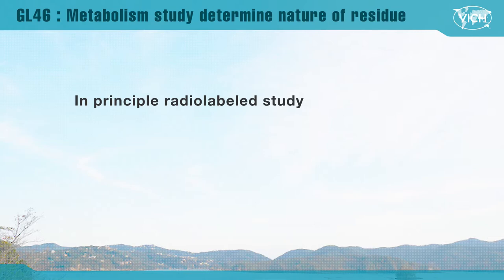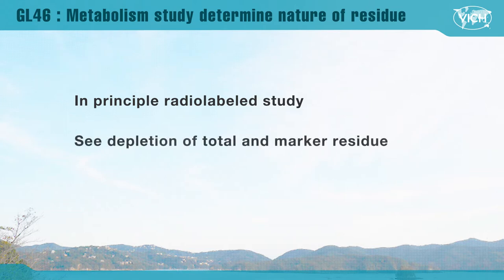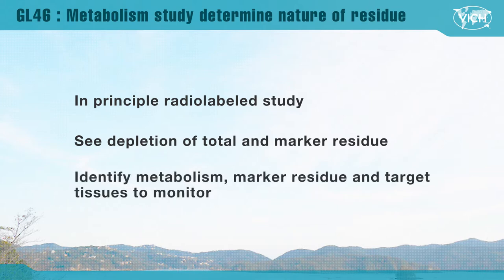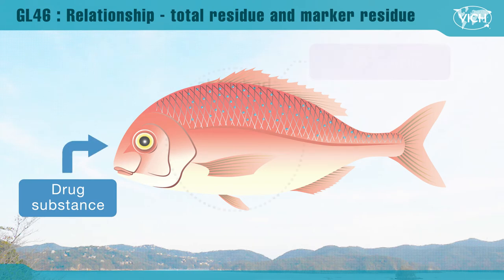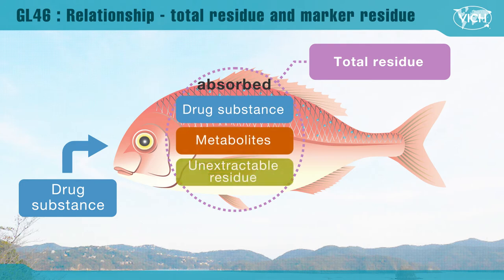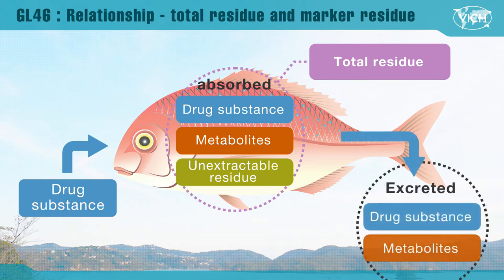The GL46 study has been designed to determine the nature of residues and is based on a radio-labeled study in principle. This guideline describes the procedure to see total residue depletion and marker residue depletion, and will also provide information on metabolism and identify a marker residue as well as target tissues for residue monitoring. The administered drug substance will be absorbed, metabolized, degraded, and then excreted. The absorbed substance in total is called total residue, and that includes drug substances, metabolites, and unextractable residue. Some metabolites are further degraded and are incorporated into the body and are no longer extractable — this is called unextractable residue. Thus, the residue assay targets the drug substance and or metabolites.